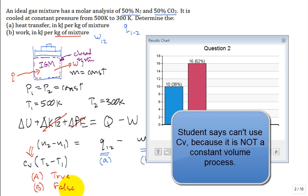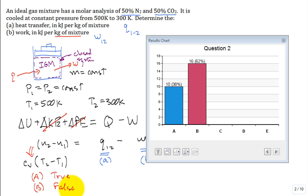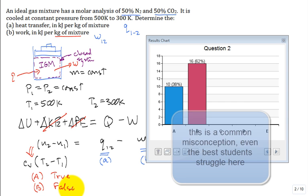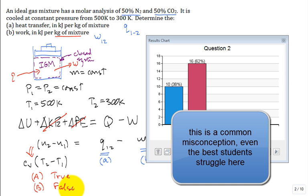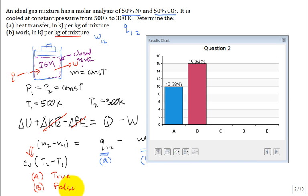even if it's not a constant volume process. Common misconception, isn't it? Can I use the property-specific heat constant volume to describe a change in a property for a substance that's undergoing a process that is not constant volume? Yes, you can.